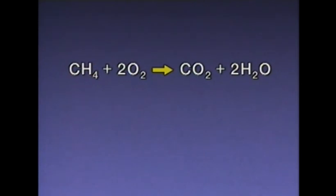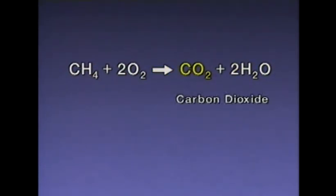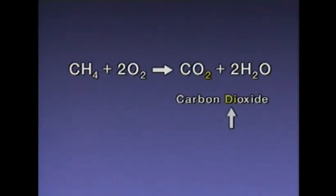This reaction yields one molecule of carbon dioxide and two molecules of water. The symbol for carbon dioxide is CO2 — the two indicates that there are two oxygen atoms. The prefix 'di' in the word dioxide is another way of indicating the presence of these two atoms. Prefixes and suffixes are often used to identify the numbers and types of elements in a material.